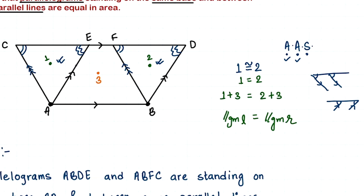Now we need a side. This side is equal to the corresponding side of the other triangle because these are opposite sides of a parallelogram — and this is given in our question. So we have our third element. By the AAS axiom we can prove the two triangles are congruent, and if they are congruent their areas are equal. Then by adding the trapezium to both sides we get the two parallelograms are equal.